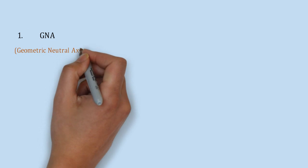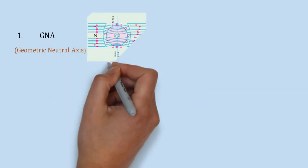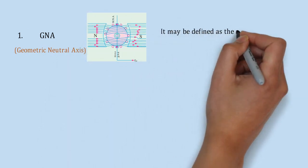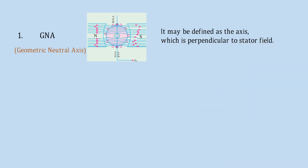First, we will start with geometric neutral axis. GNA may be defined as axis which is perpendicular to field flux line.